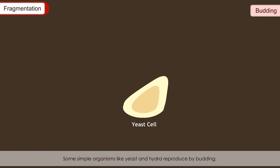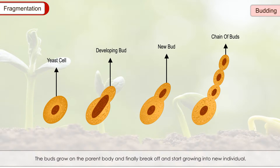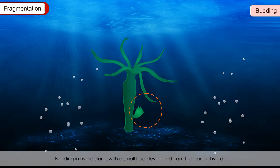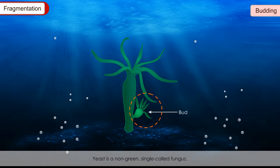Budding: Some simple organisms like yeast and hydra reproduce by budding. In budding, small outgrowths called buds are produced. The buds grow on the parent body and finally break off and start growing into a new individual. Sometimes a bud remains attached with the parent body and keeps producing more buds. Hydra is a small freshwater organism. Yeast is a non-green, single-celled fungus.